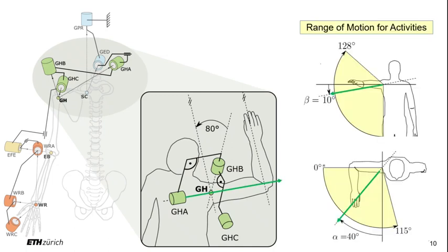In the undeflected position, the arm of the user is aligned with the middle of the range of motion that is required for activities of daily living. Thereby, the best manipulability is achieved.